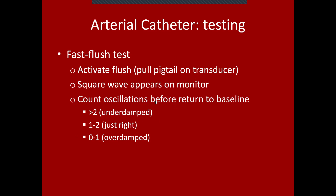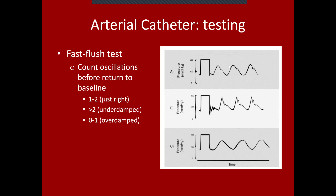About one to two oscillations is just right — we like to see that, such as in observing the dicrotic notch. If you see none or one oscillation before return to baseline, we consider that an overdamped A-line with too much energy being absorbed. So we have appropriately damped (A), underdamped (B), and overdamped (C) as described.